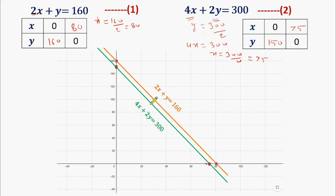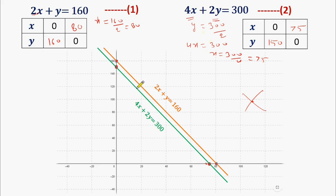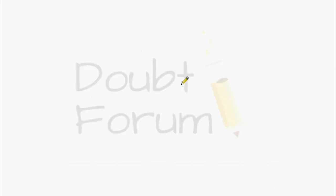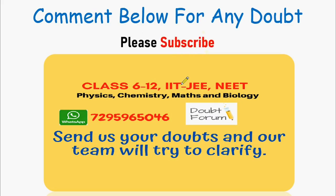Looking at these two lines, they are parallel. When lines are parallel, they have no solution. We have seen that in the last case lines were intersecting, and that point of intersection was the solution. But in this case, line 1 and line 2 are parallel, so these two equations do not share a common value of x and y — the equations have no solution. Thank you.